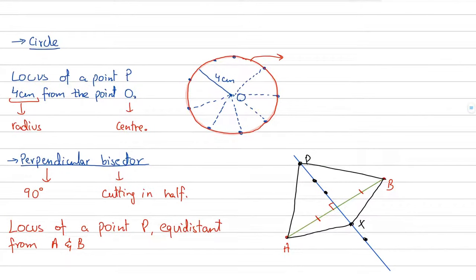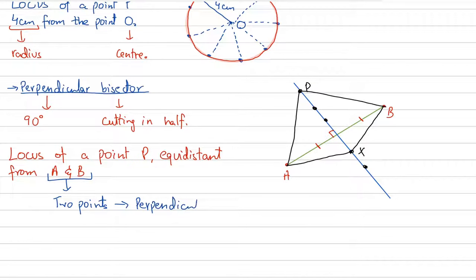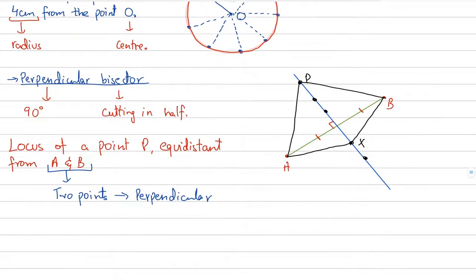We make a perpendicular bisector when the question asks us to construct a locus of a point equidistant from A and B. Whenever you have to draw a locus from two points, you make a perpendicular bisector.